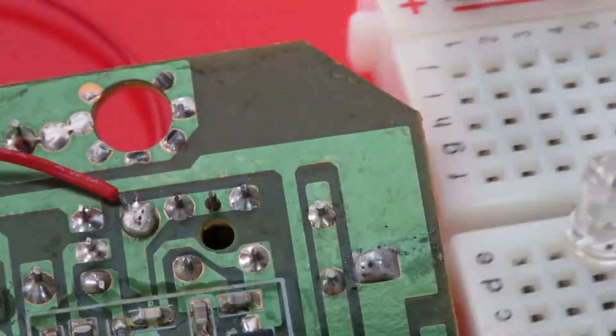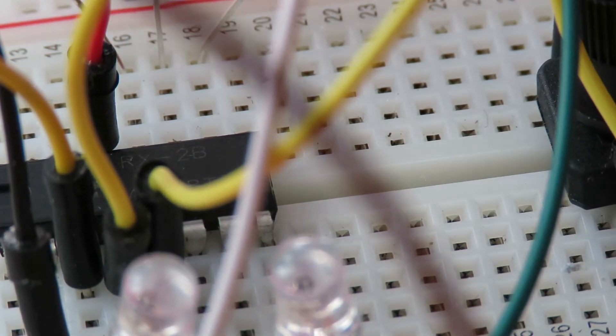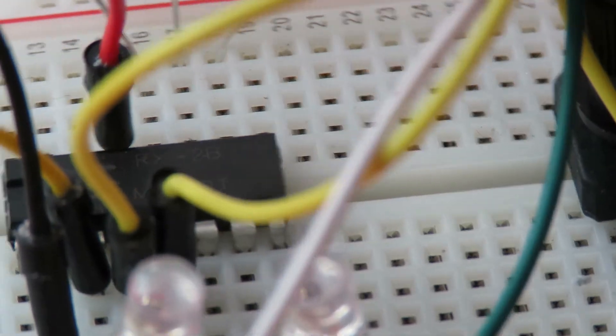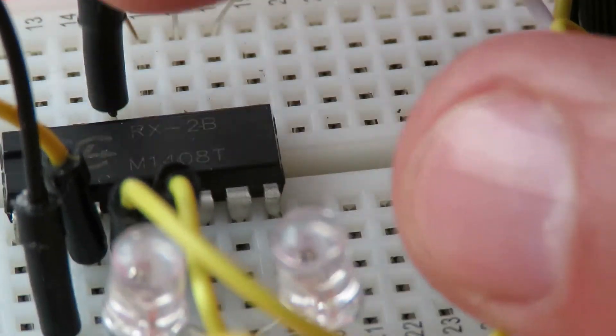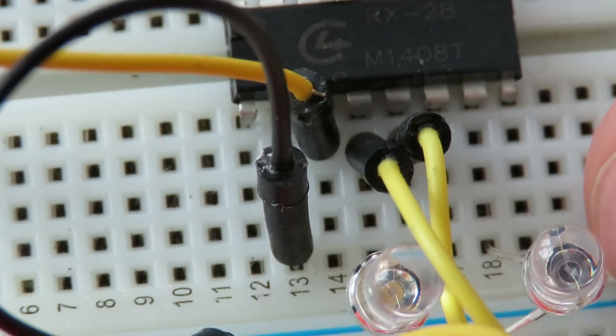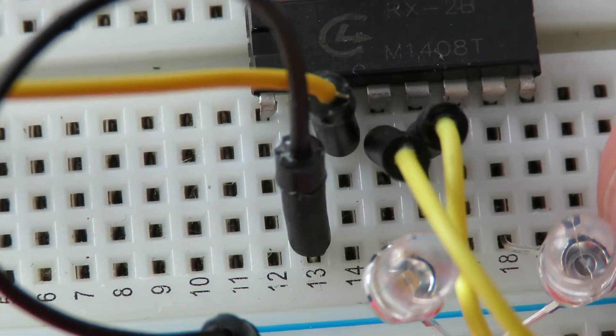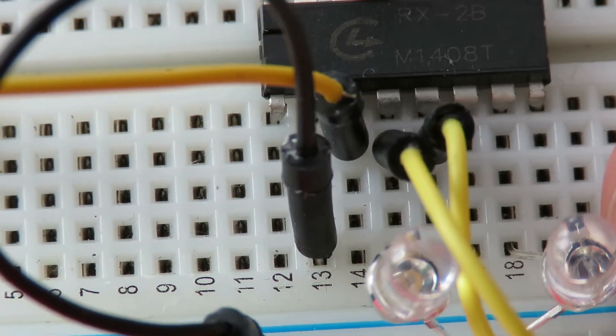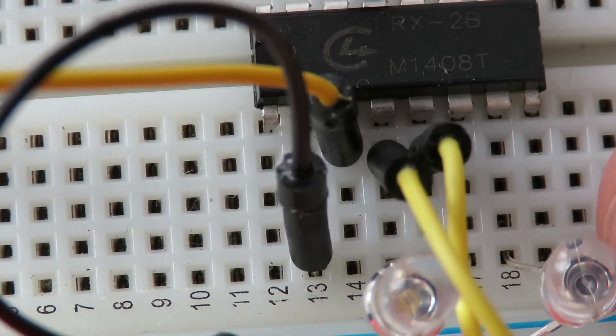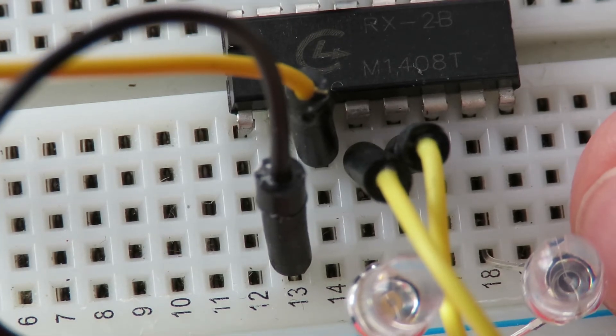And then on the receiver chip, this is a bit messy to try and look at. Counting along the bottom: one, two, three. There's a yellow wire there going onto pin 3. Unfortunately I've also used yellow wires on pin 4 and 5.